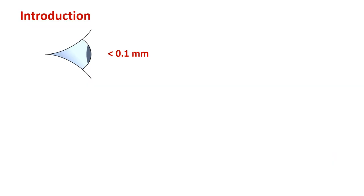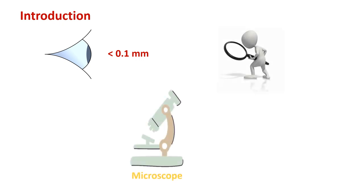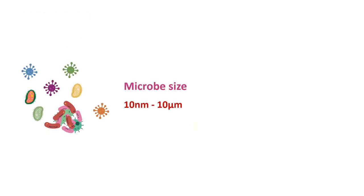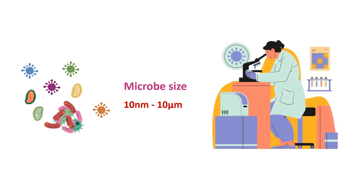Anything smaller than 0.1 millimeter is too small for the human eye to see without the help of special tools. To see smaller objects we need special tools. A microscope is such a tool that helps us to visualize tiny objects. Micro means small and scope means to look at. Microbes are too small in shape — their size is around 10 nanometers to 10 micrometers — and it is impossible to see them with the naked eye. We need a microscope which magnifies the image of microbes, then it becomes easier to visualize them.